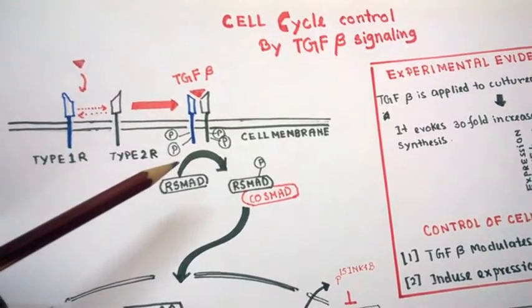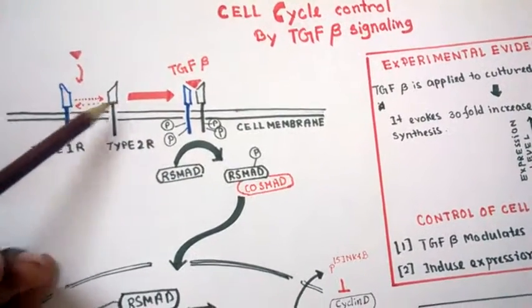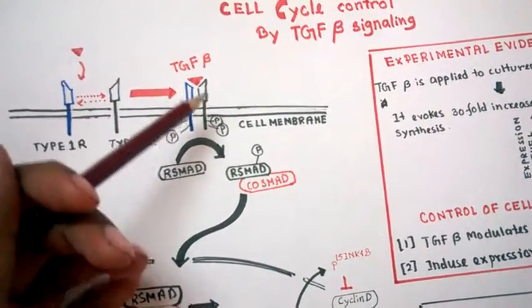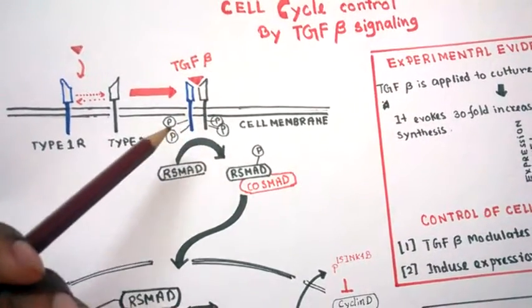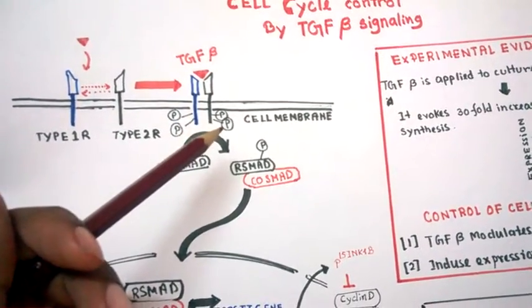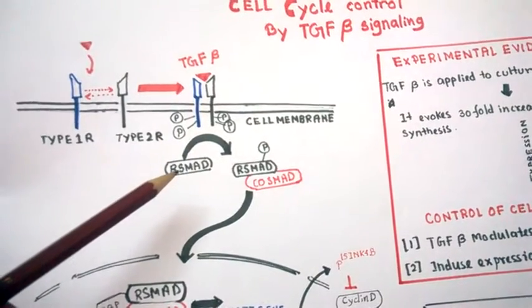Once the ligand binds to one receptor, another receptor comes in and dimerizes to form this TGF beta heterodimer. These heterodimer receptors get phosphorylated upon ligand binding, and this phosphorylated receptor cytoplasmic tail helps the RSMAD.